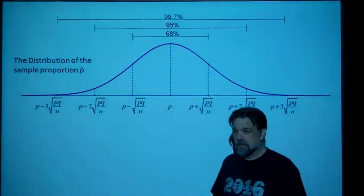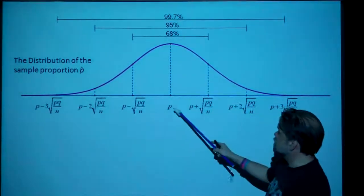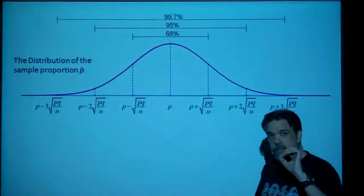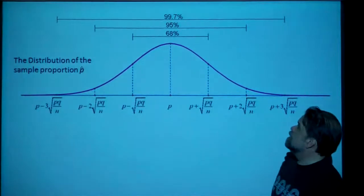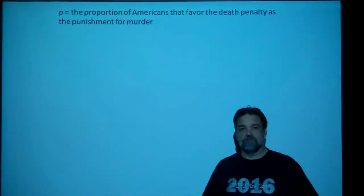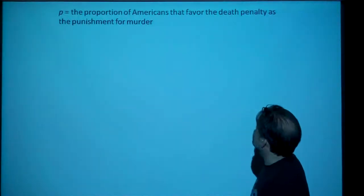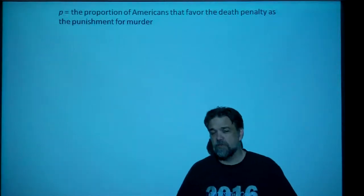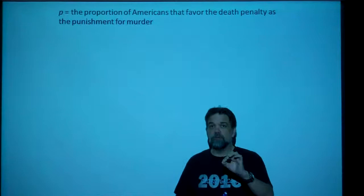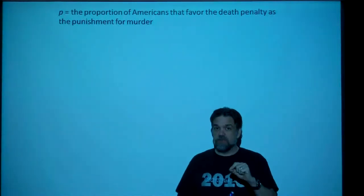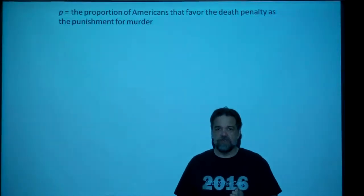If we take a sample proportion, that sample proportion is going to be centered around p, the population proportion, or the true proportion. Let's go to the real world. There's some proportion of Americans that favor the death penalty as the punishment for murder. We're going to call that proportion p — that's our true proportion, our population proportion. What is p exactly? We don't know. That's the issue.